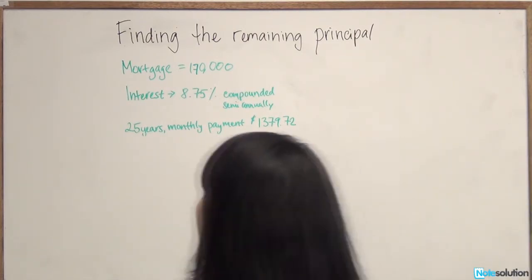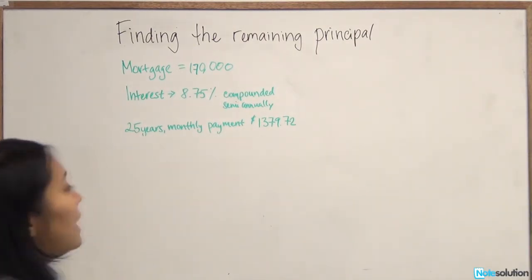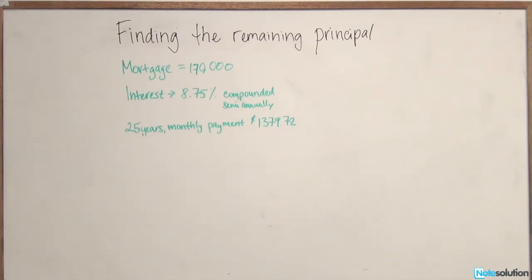The remaining principal on a mortgage at any time is just the present value of all the monthly payments. Before we proceed, we need to make sure that every term we're going to put into our financial calculator is in the same terms. We have monthly payments, so we want everything in monthly terms.